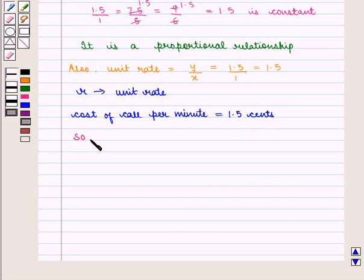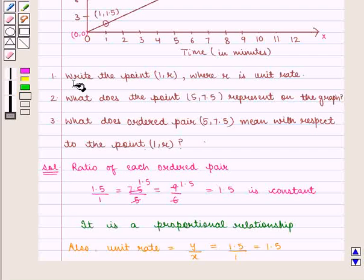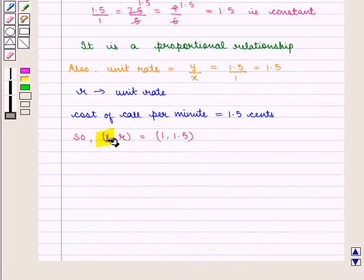So, we have (1, R) as (1, 1.5). So, we can say the point (1, R) where R is the unit rate is given by (1, 1.5).